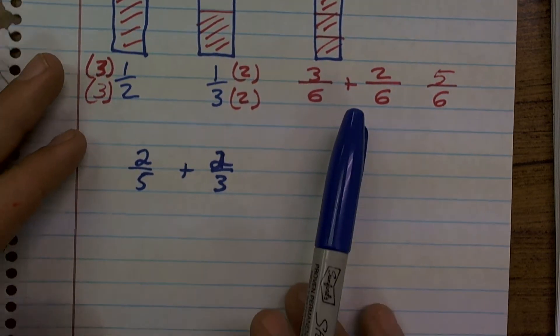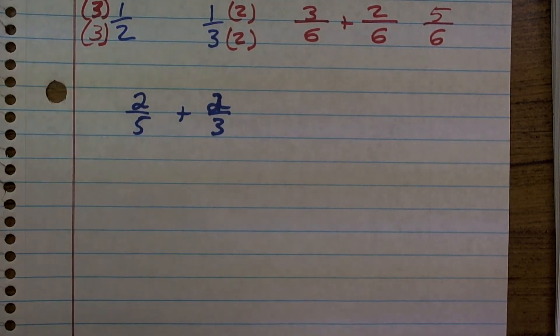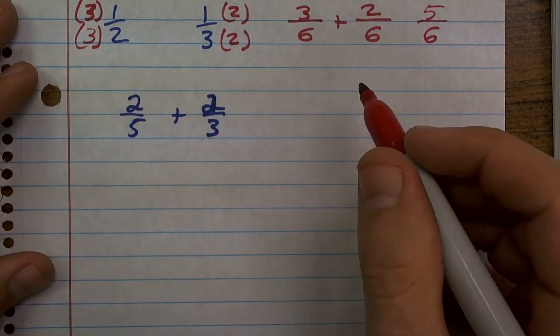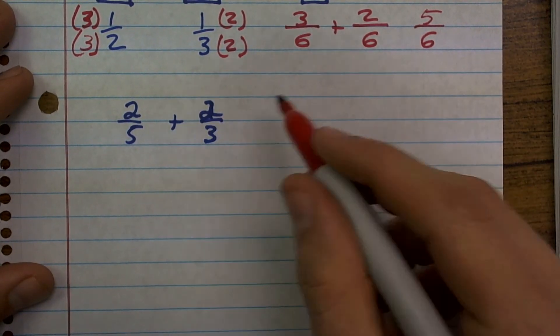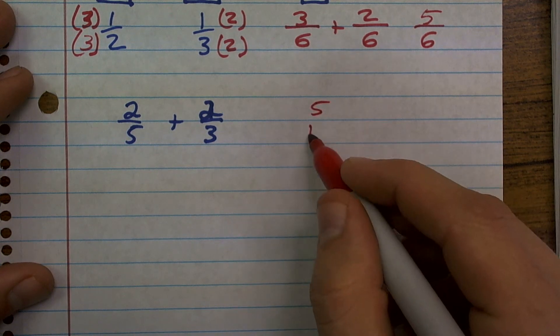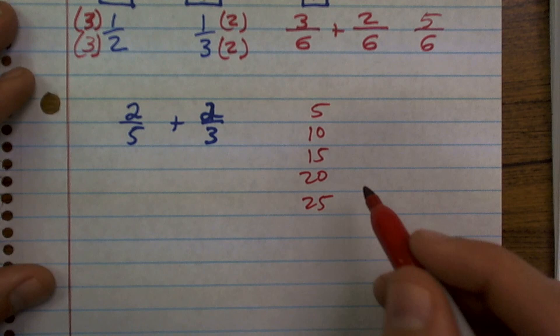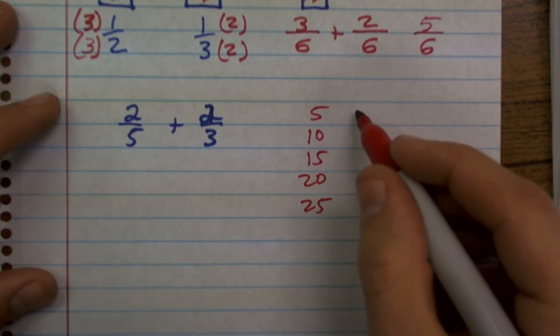So what we need to do is make sure we have our common denominators. To get 5 and 3 to be my common denominators, I'm just going to list the multiples of each number. So to list the multiples of 5, I can do 5, 10, 15, 20, 25, and I'll stop there and just check 3 and see where I'm at.